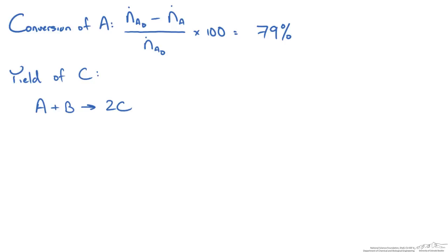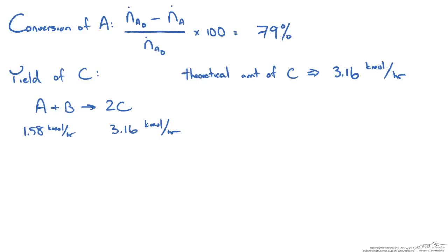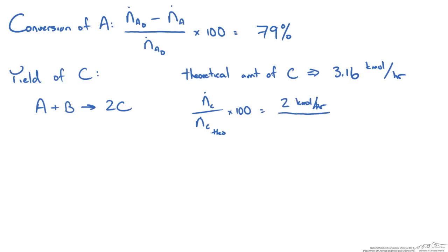Next we calculate the yield of our desired product C. The yield is based on the theoretical amount of C we could produce from our limiting reagent, in this case A. Since we have 1.58 kmol per hour of A entering, and the stoichiometry gives 2 moles of C per mole of A, the theoretical maximum is 3.16 kmol per hour of C. Taking the actual outlet flow of 2 kmol per hour over the theoretical 3.16 kmol per hour and multiplying by 100, we get a yield of C of 63%.